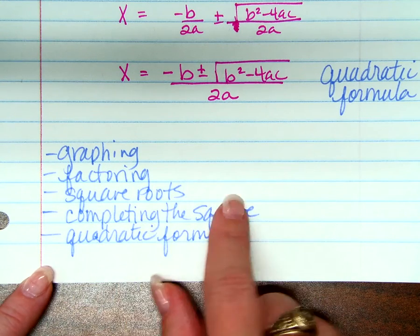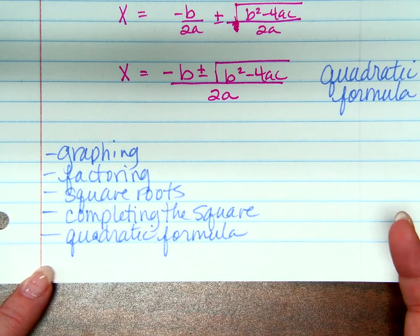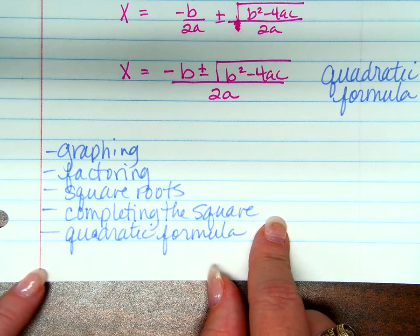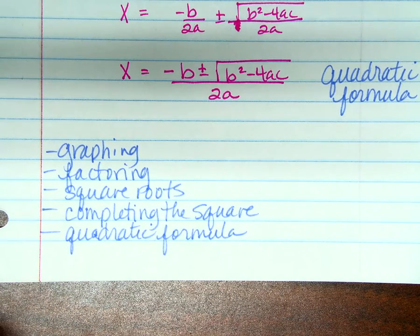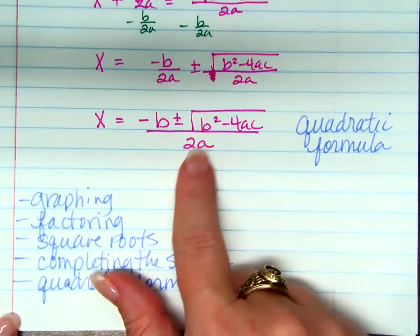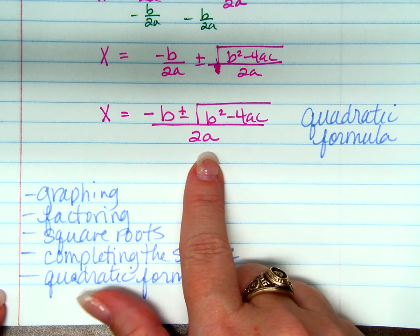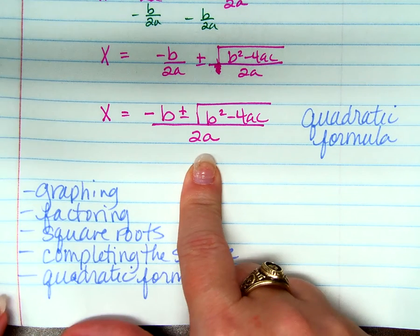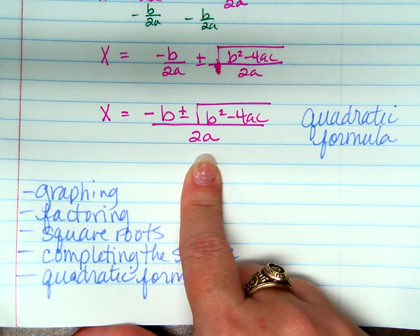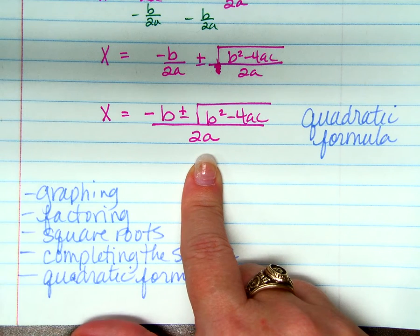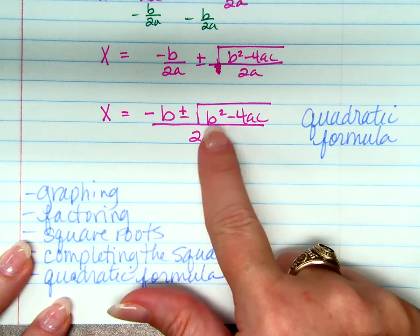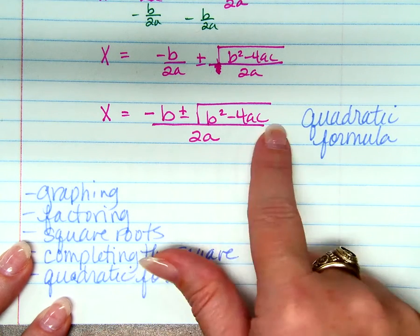If there's an x² term but not an x-term, take the square root of both sides — super easy. Completing the square is a puzzle. When the leading coefficient is 1 and I can't factor it, that's probably what I'll try. But quadratic formula works every single time. This formula you're going to memorize — it's one of those important ones that I'm not going to put on the board for you during the test. x equals negative b plus or minus the square root of b² minus 4ac, all over 2a.